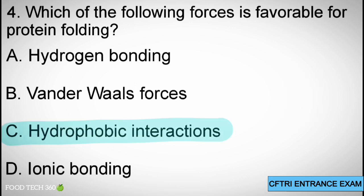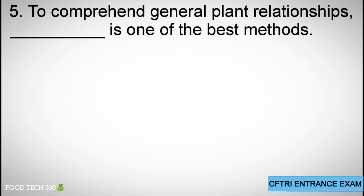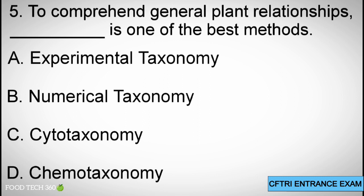Question 5: To comprehend general plan relationships, which is one of the best methods? A. Experimental taxonomy, B. Numerical taxonomy, C. Cyto-taxonomy, D. Chemo-taxonomy. Correct answer: D. Chemo-taxonomy.